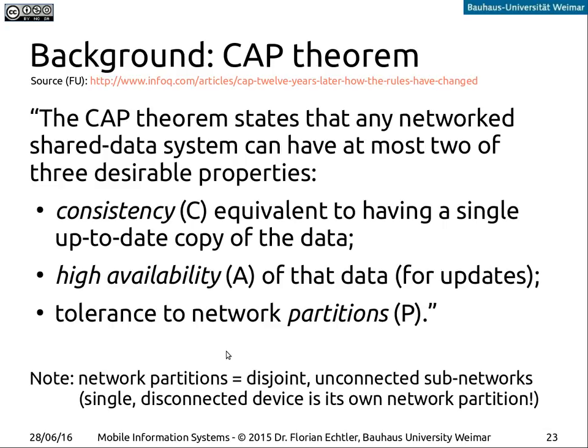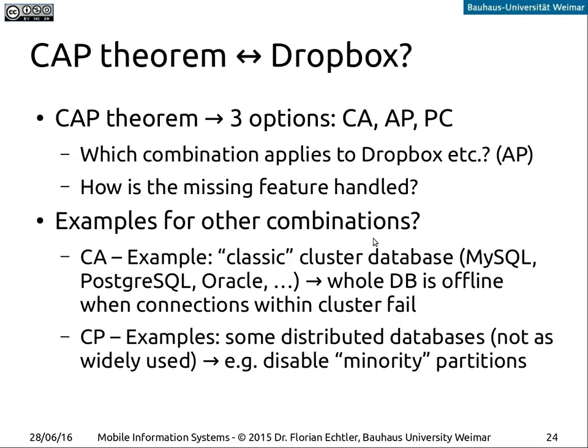Network partitions means that you have disconnected subnetworks — there may be connectivity within the subnetwork, but there is no way to send data to the other subnetwork. A single device which doesn't currently have a data connection is in this sense a tiny network partition on its own. The CAP theorem provably states that you can only ever have two out of three of these properties.